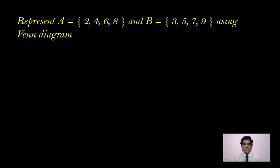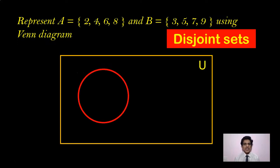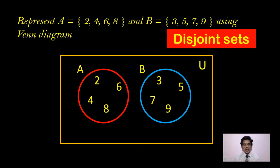One more example: A is the set {2, 4, 6, 8} and B is the set {3, 5, 7, 9}. First identify: do they have any common elements? A has 2, 4, 6, 8 and B has 3, 5, 7, 9 — no common elements. That means these two are disjoint sets. When you have disjoint sets, you draw the circles separately and independently, with no overlap.